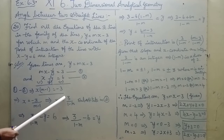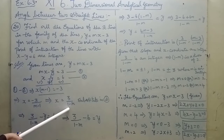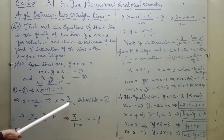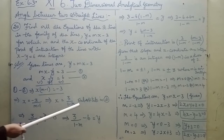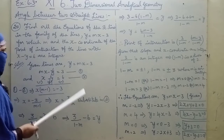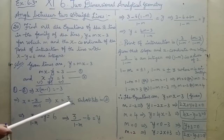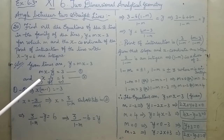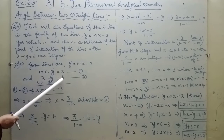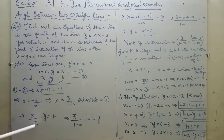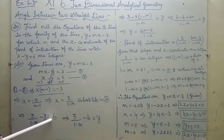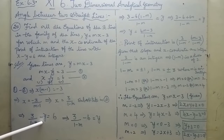Solving the system, x equals 3 divided by (1 - m). Taking the equation x - y = 6, we substitute x = 3/(1 - m), so 3/(1 - m) minus y equals 6. We then find y by taking the LCM.